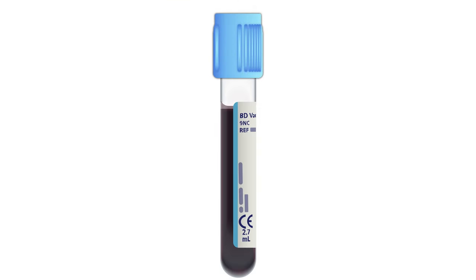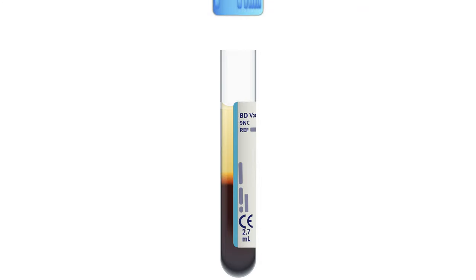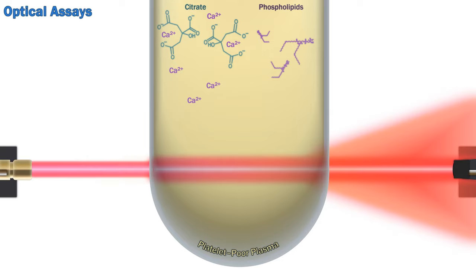I'm going to start with the most well-known tests of coagulation function. They start with one of these tubes containing sodium citrate, which binds to calcium, depriving coagulation factors 2, 7, 9, and 10 of an essential cofactor. The sample is then centrifuged. This removes blood cells and platelets, leaving a citrated sample of what's known as platelet-poor plasma. Calcium needs to be added back to the sample to allow coagulation to proceed. Because the sample is platelet-depleted, phospholipid also needs to be added as a substitute for platelet membranes.